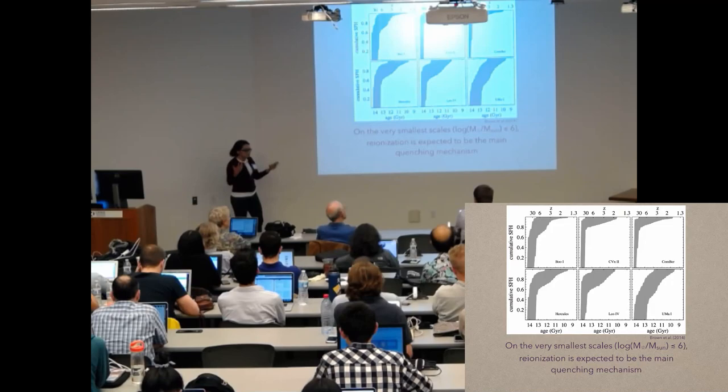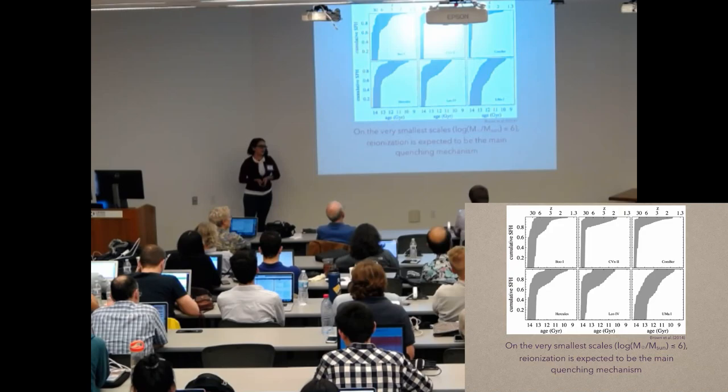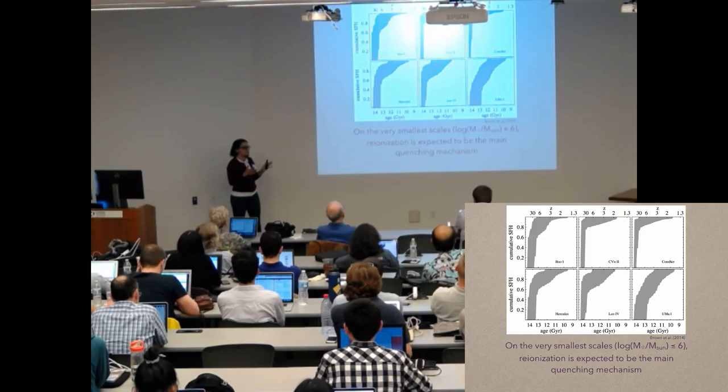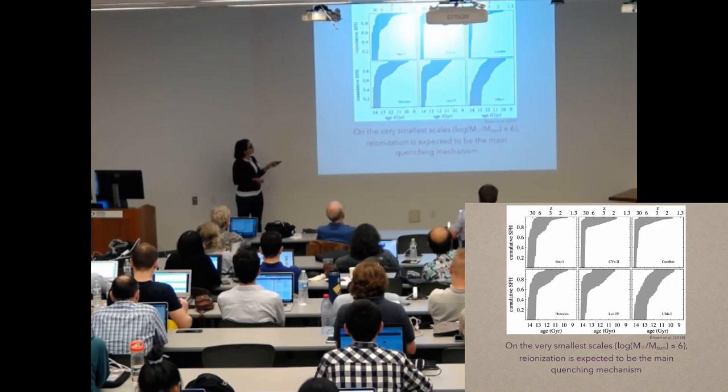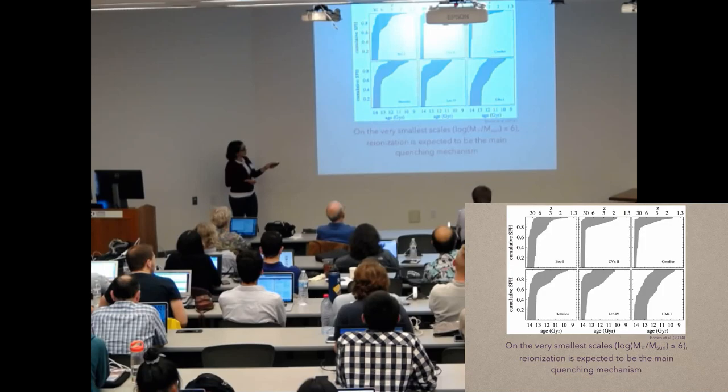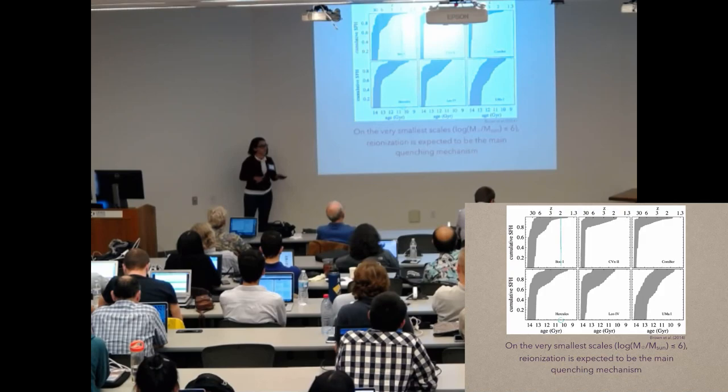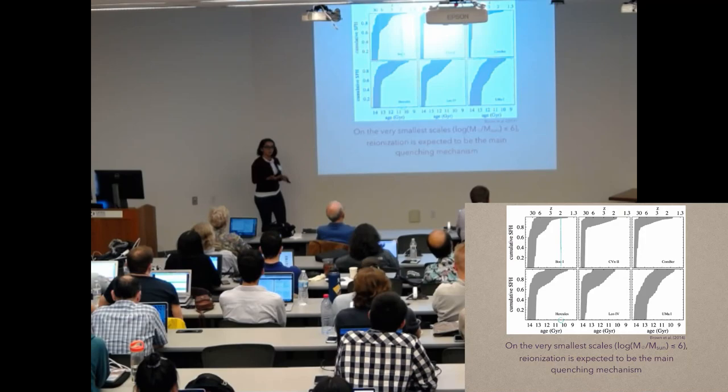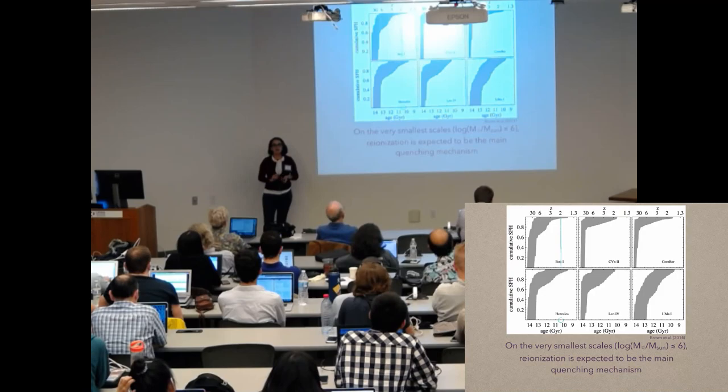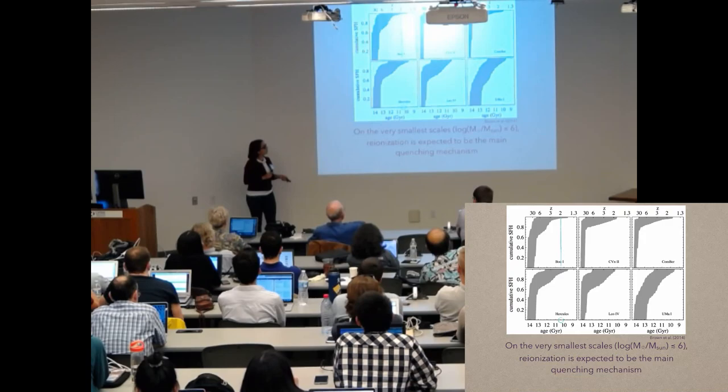We do know that satellite galaxies exist in these tiny ranges. These are the ultrafaint dwarf galaxies. In 2014, Tom Brown looked specifically at these six, observing them with Hubble and Keck, and he put together these star formation histories where, as you can see, most of them, maybe except for Ursa Major I, formed most of their stars by about redshift of two. So this kind of points to reionization as being the main mechanism that quenched star formation in these six ultrafaint dwarfs.